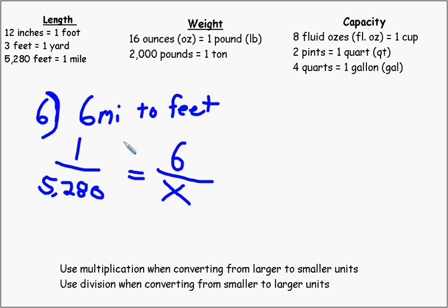So we can think of it two ways. We can just simply think, remember, I'm going from the large unit, the mile, to the feet. So I just multiply 6 times however many feet in a mile.